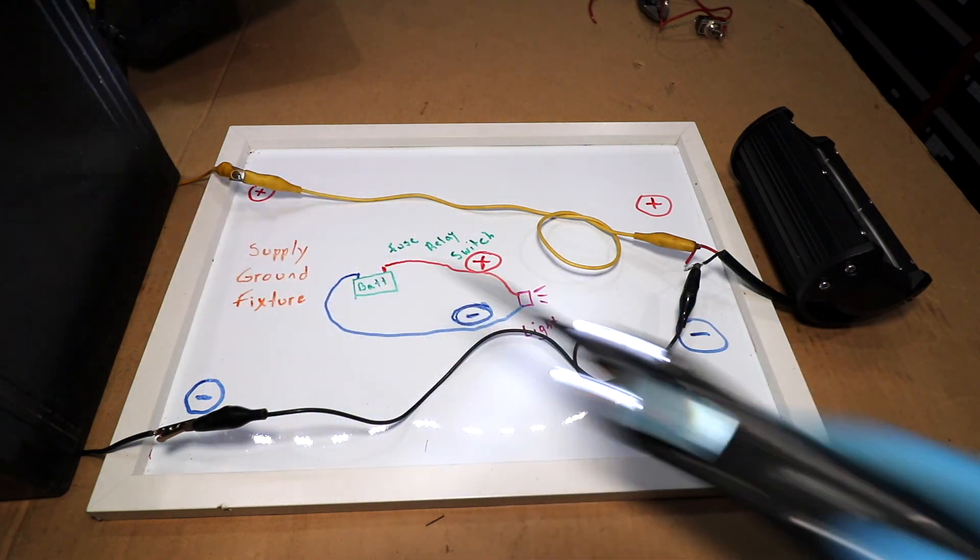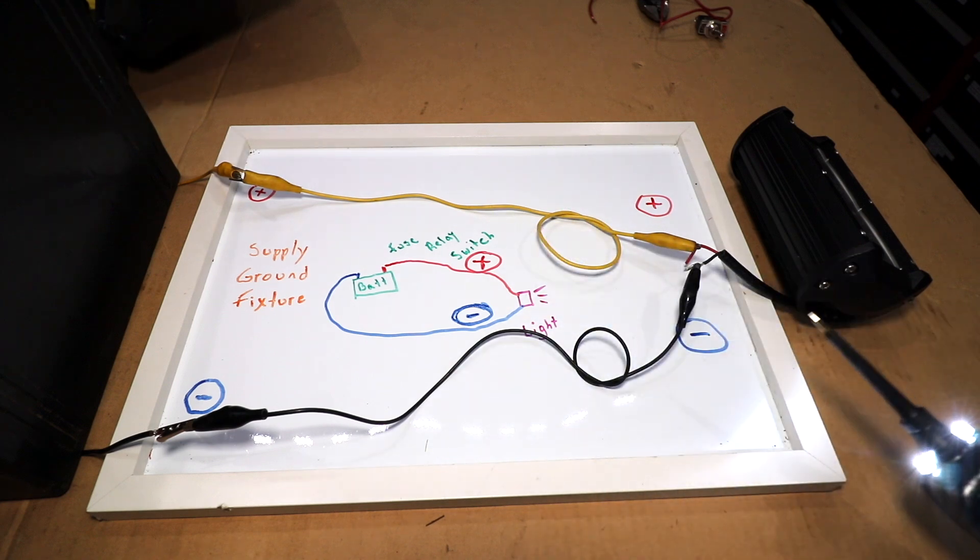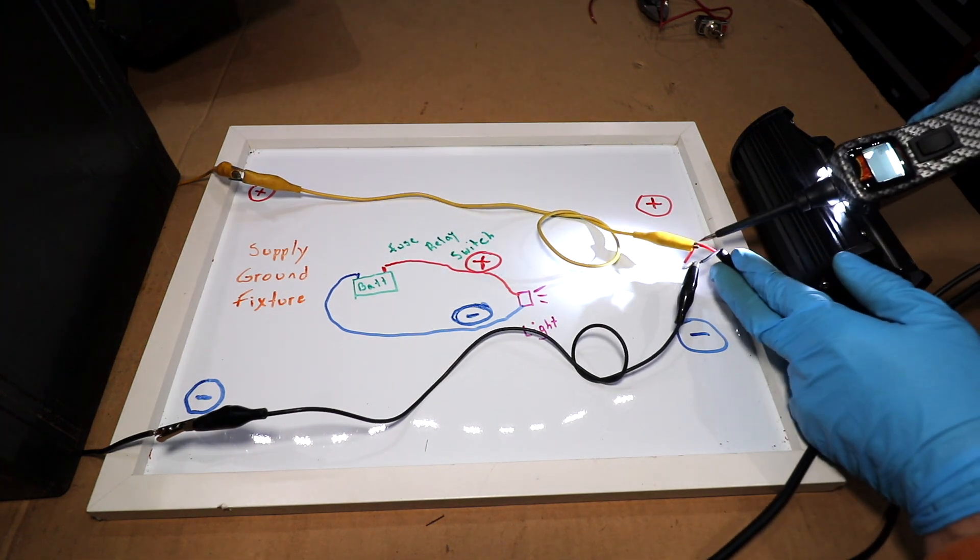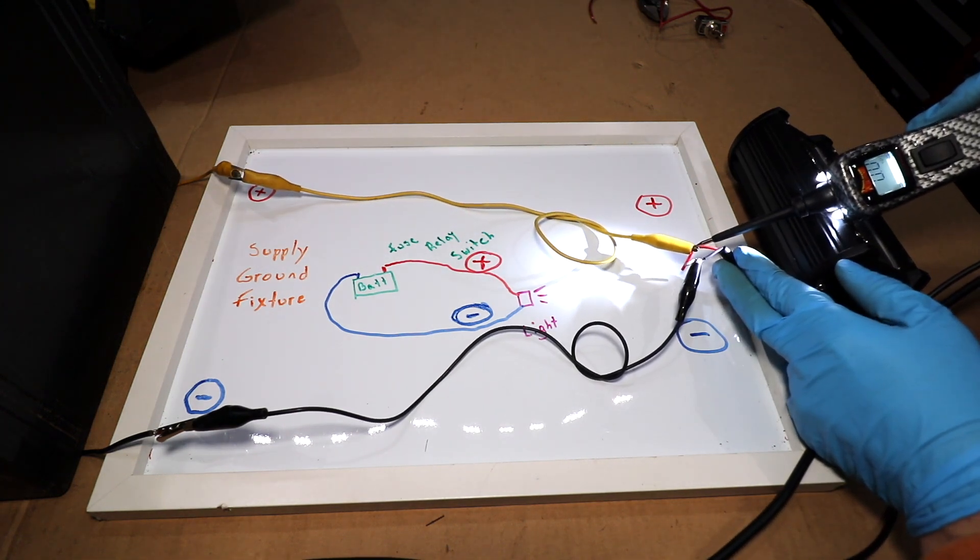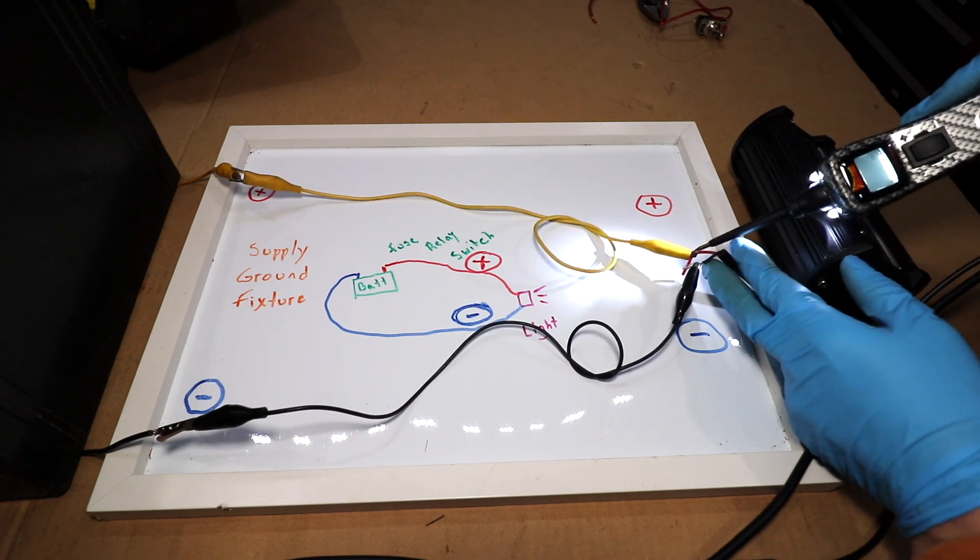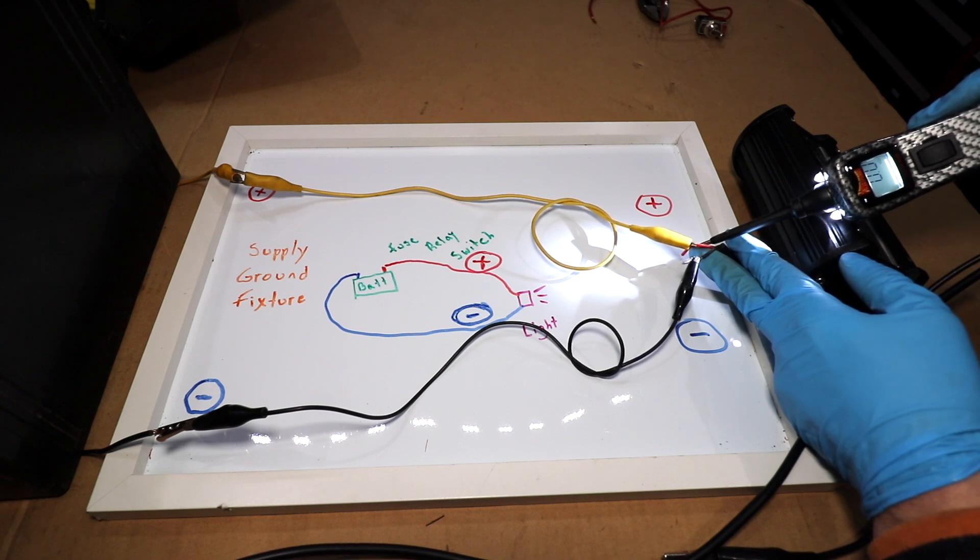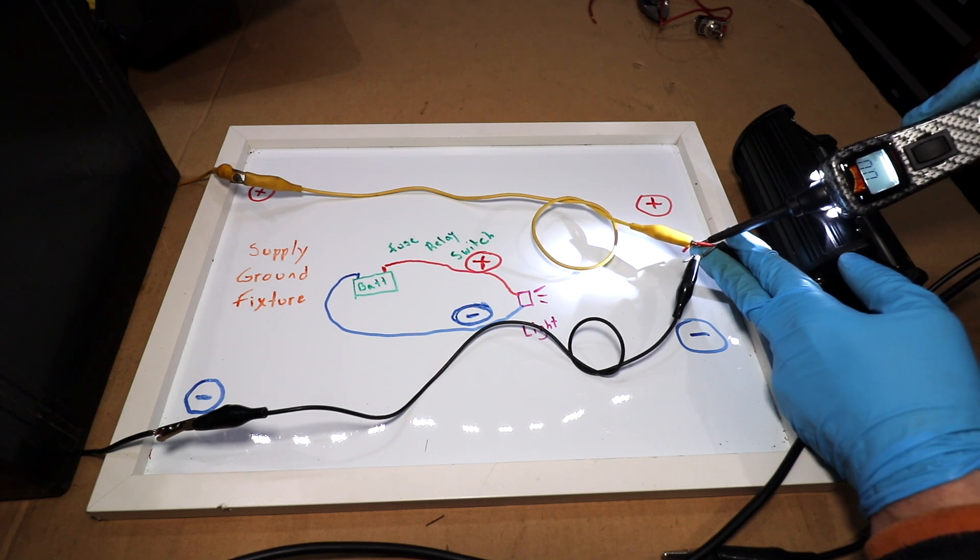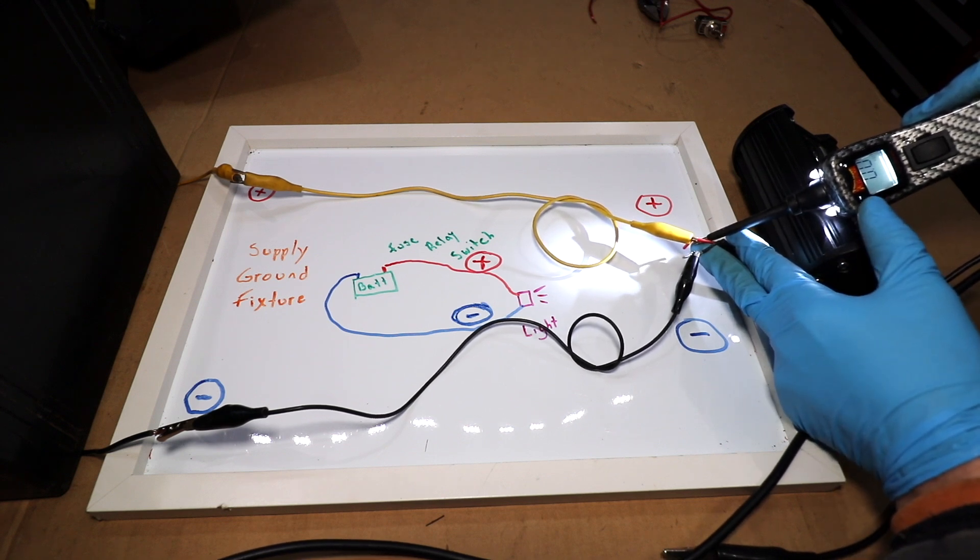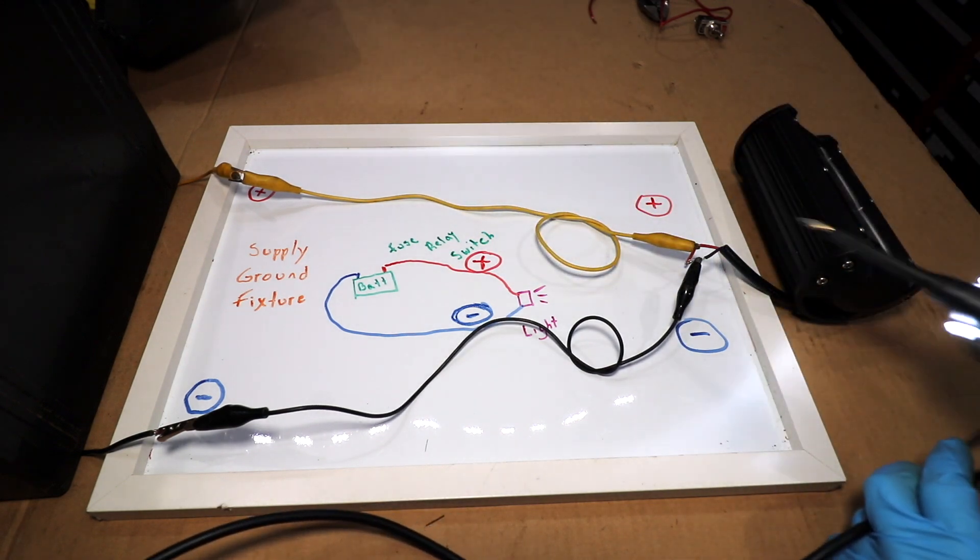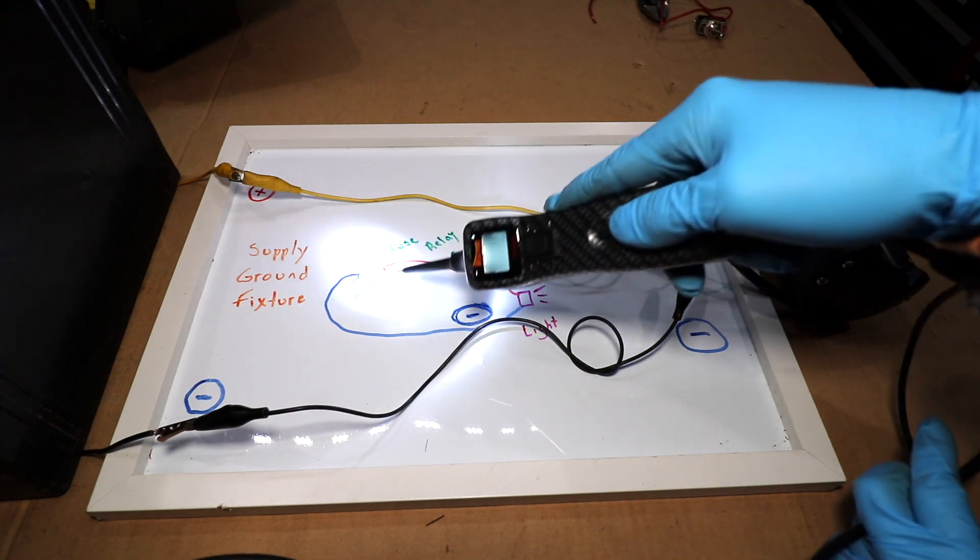So we can cross that off. Is it the fixture itself or a supply issue? Well, I'm not sure yet. Let's probe the supply line. Let's see if we're getting 12 volts of power coming into the fixture. Interesting. So when I probe the 12 volt supply line going into the fixture, the plus indicator is not turning on. The Power Probe is not sounding in that high-pitched sound, and I'm not getting any voltage on the screen. So that tells me we are not getting 12 volts of power coming into this light fixture. So now we know our issue is in between the light and the battery itself.